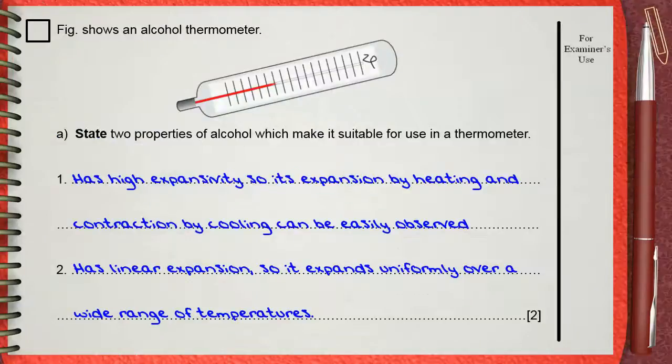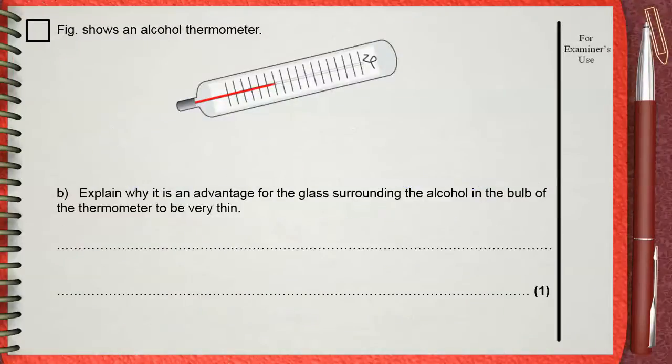Question b: Explain why it's an advantage for the glass surrounding the alcohol in the bulb of the thermometer to be very thin.